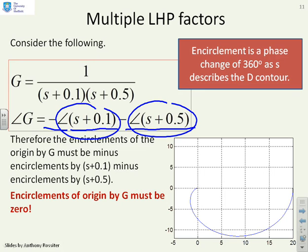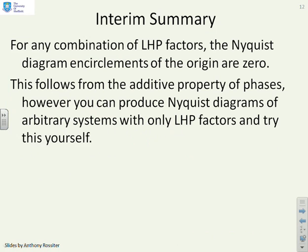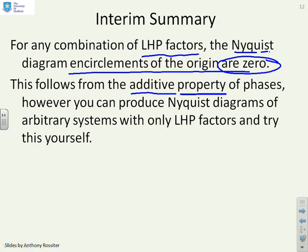If you plot the Nyquist diagram to confirm this, here it is with the mirror image and the right-hand turns added — you get something like this, and you can see it manages to avoid the origin. The origin is not inside, so you have no encirclements. So an interim summary: any combination of left half plane factors gives zero Nyquist diagram encirclements of the origin. This follows from the additive property of phases. It's far easier just to use the additive property of phases — if you get zero from an individual factor, adding all the factors together, you're still going to get zero.